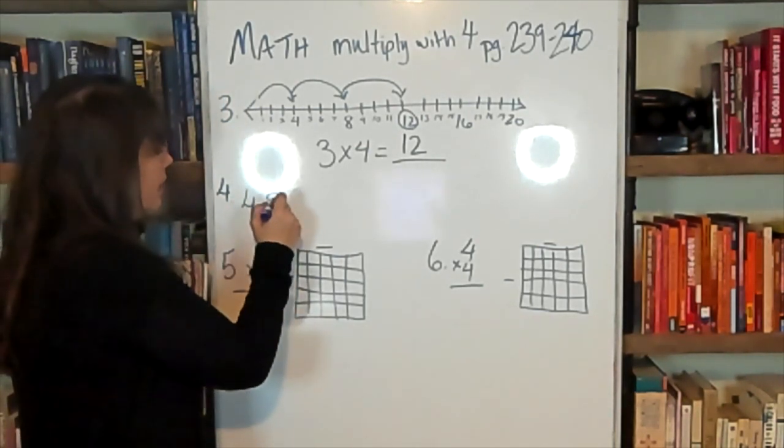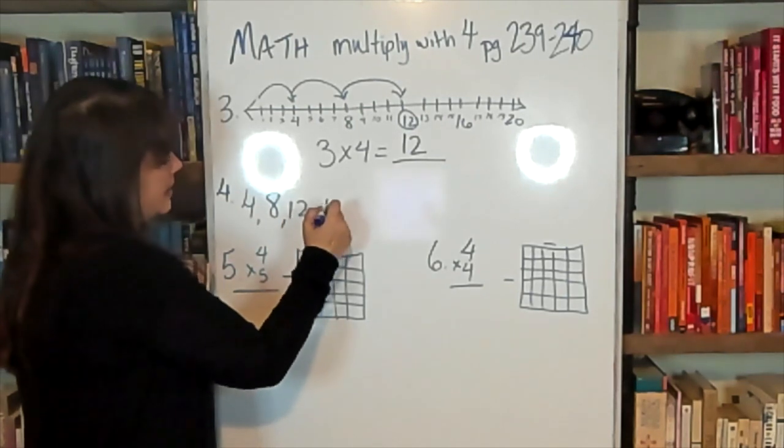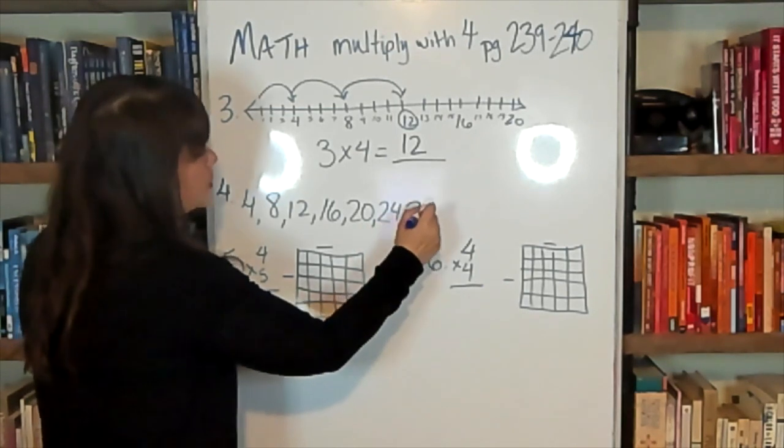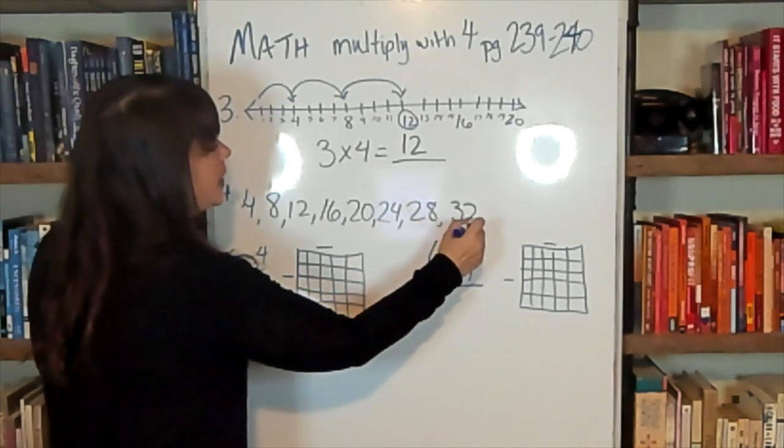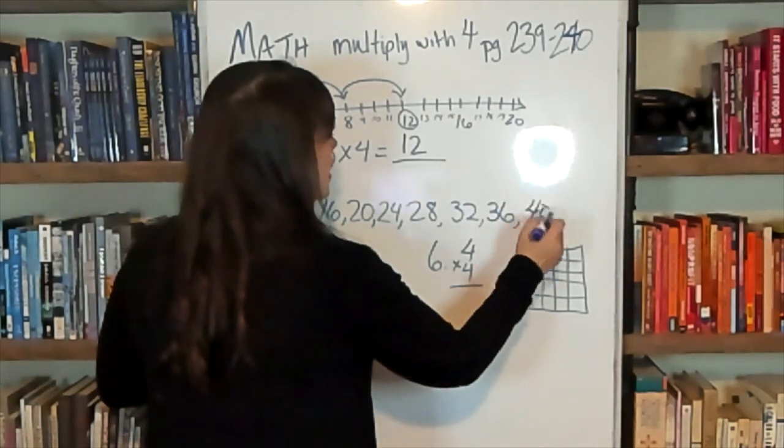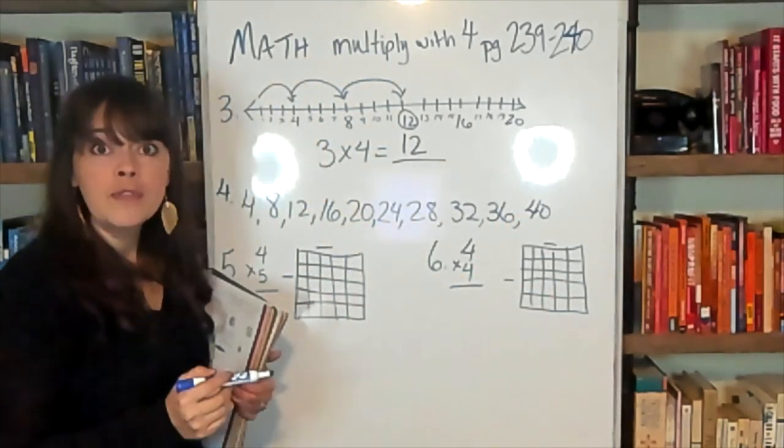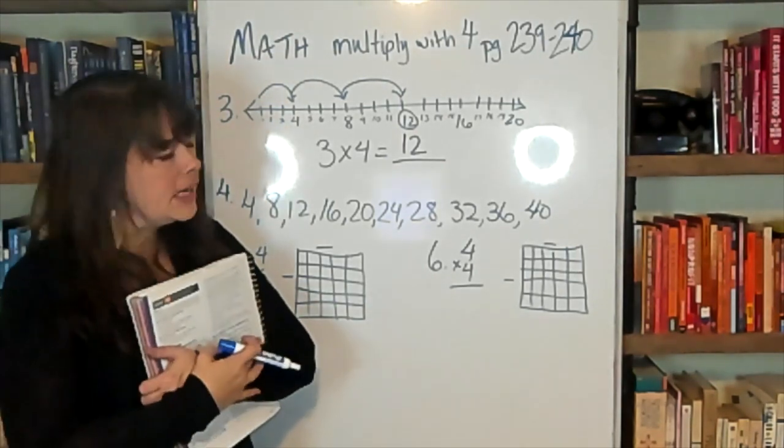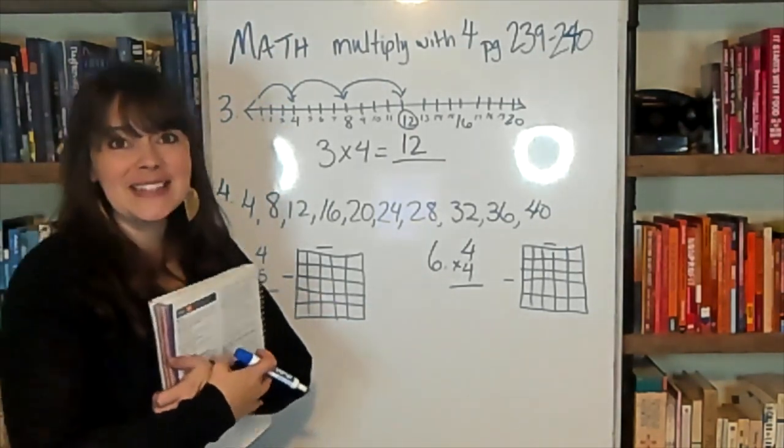4, 8, 12, 16, 20, 24, 28, 32, 36, 40, 44, 48. You want to go all the way to 12. Singing 4's is really great.